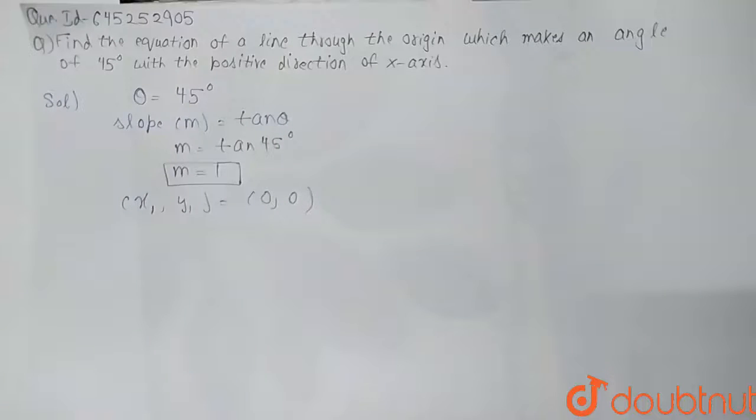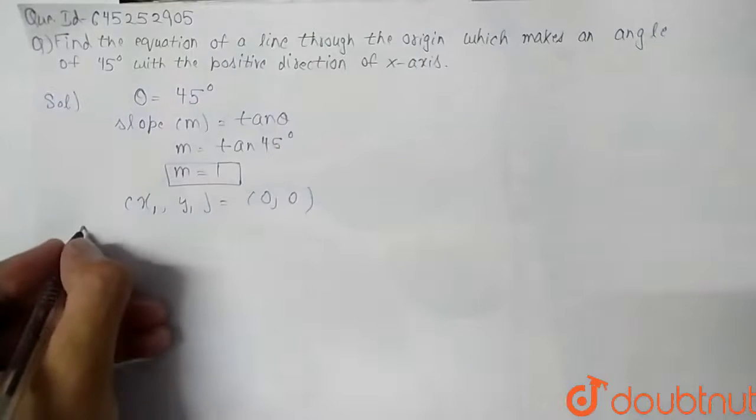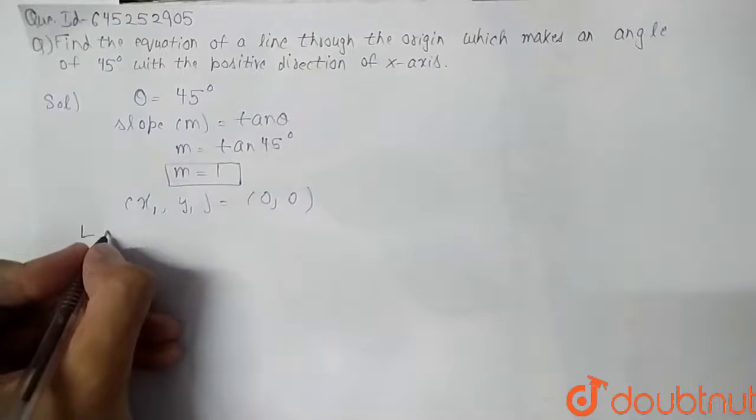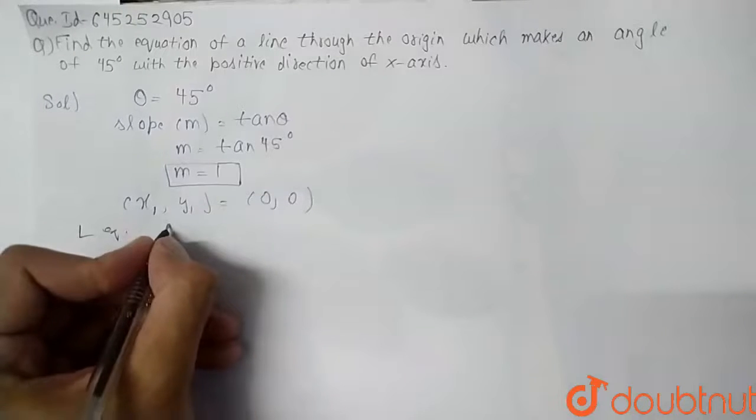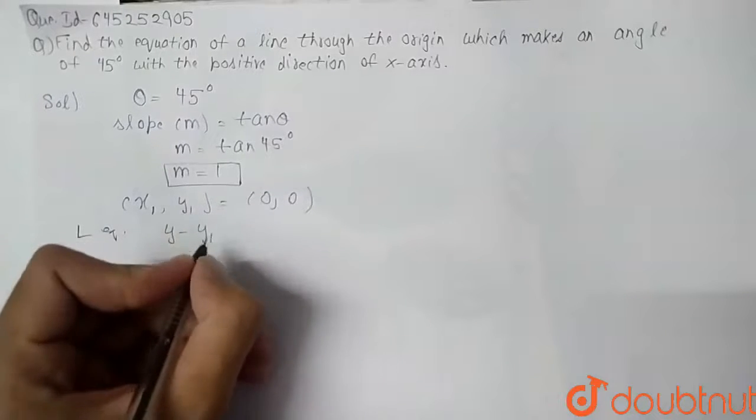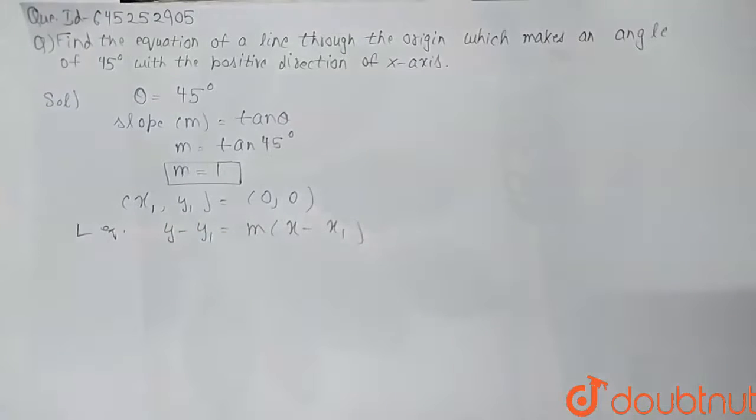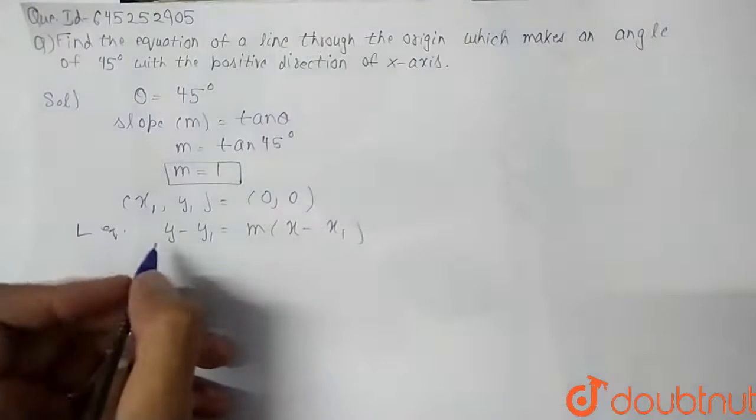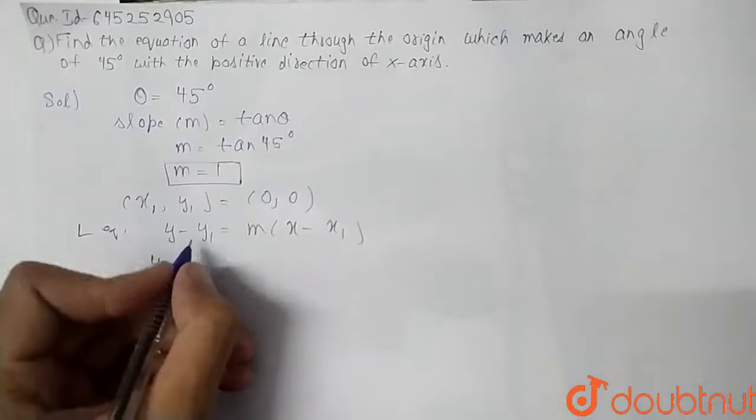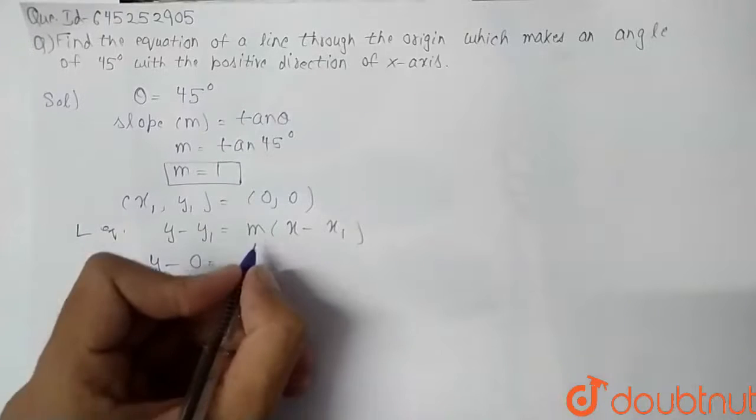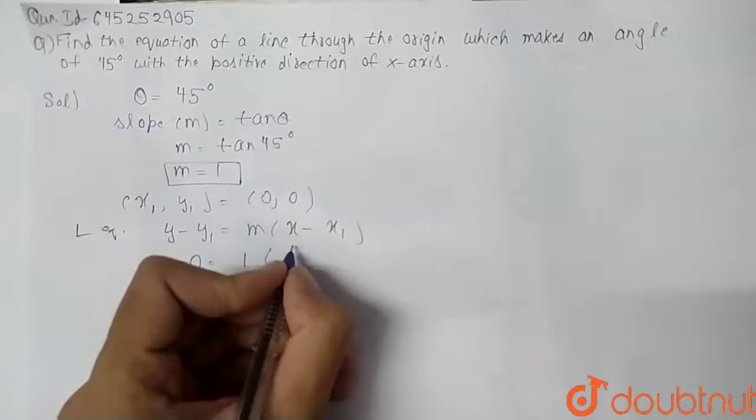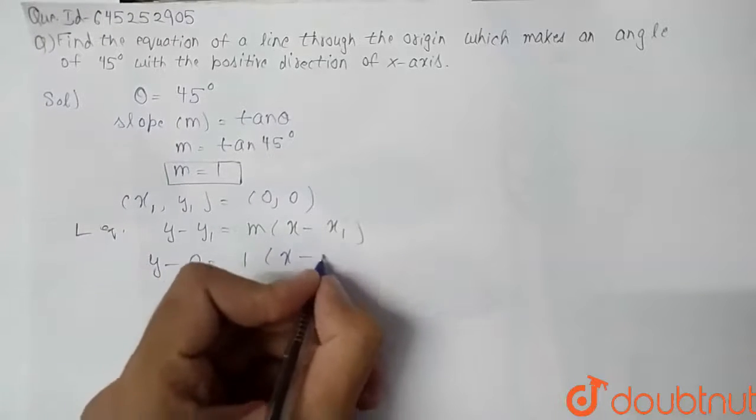We have the equation of line is y minus y1 equals m times x minus x1. Now we put the values of all these, so we have y minus 0 equals 1 times x minus 0.